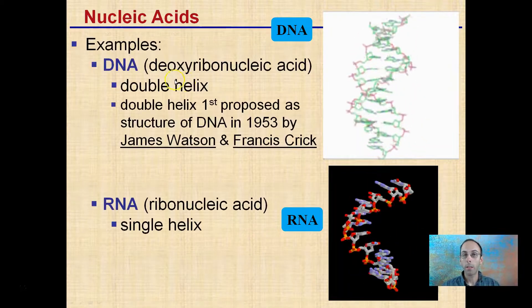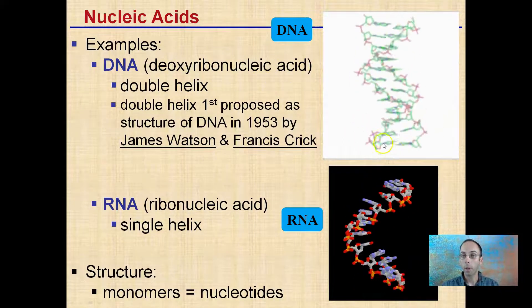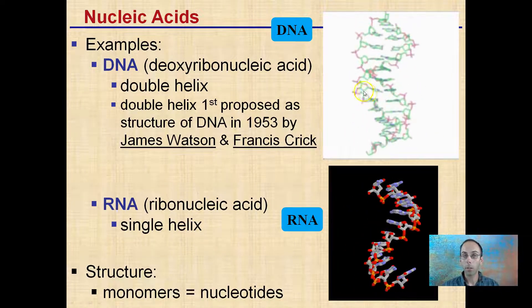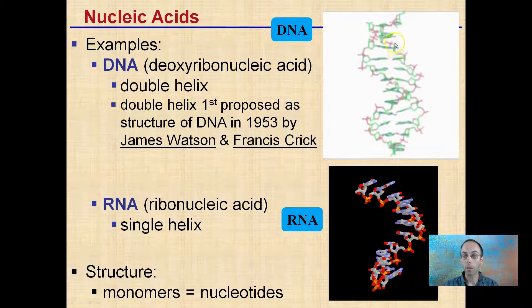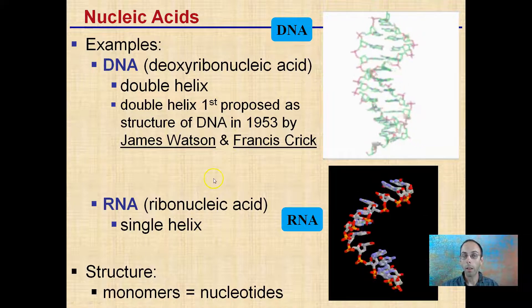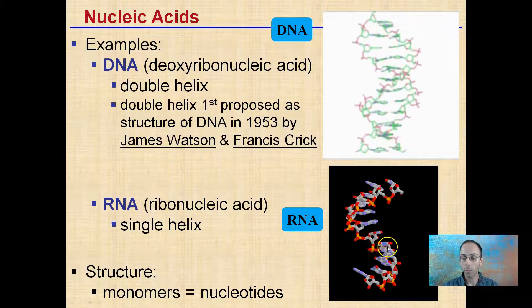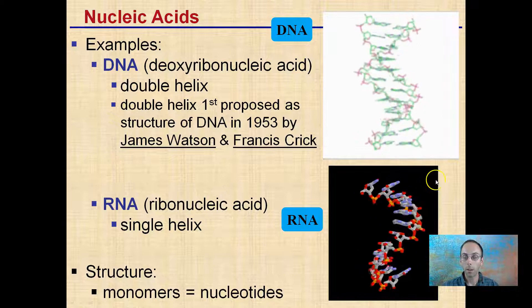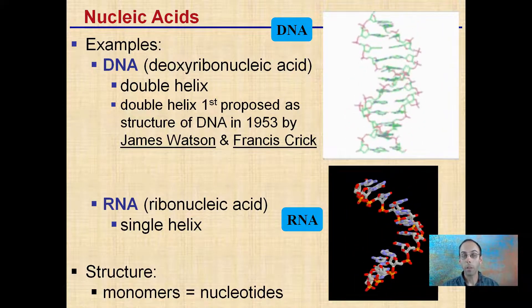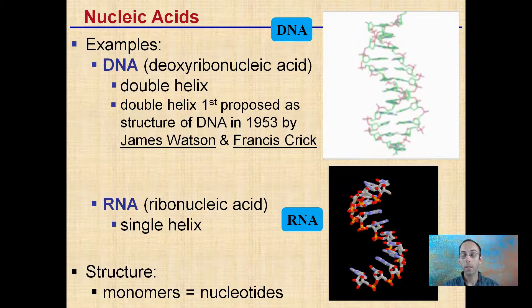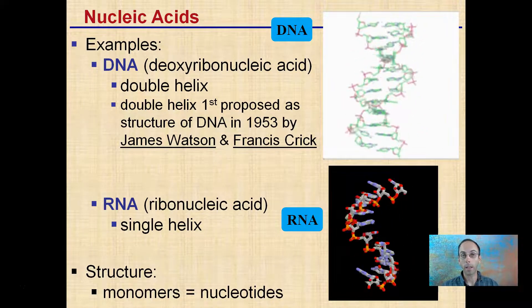Nucleic acids: DNA stands for deoxyribonucleic acid. It's a double helix structure, and its structure was first proposed in 1953 by Watson and Crick. RNA is ribonucleic acid, and it's a single helix — we see there's kind of one strand. Now, both of these nucleic acids have monomers — the building block for these is nucleotides. That's the building block for nucleic acids.